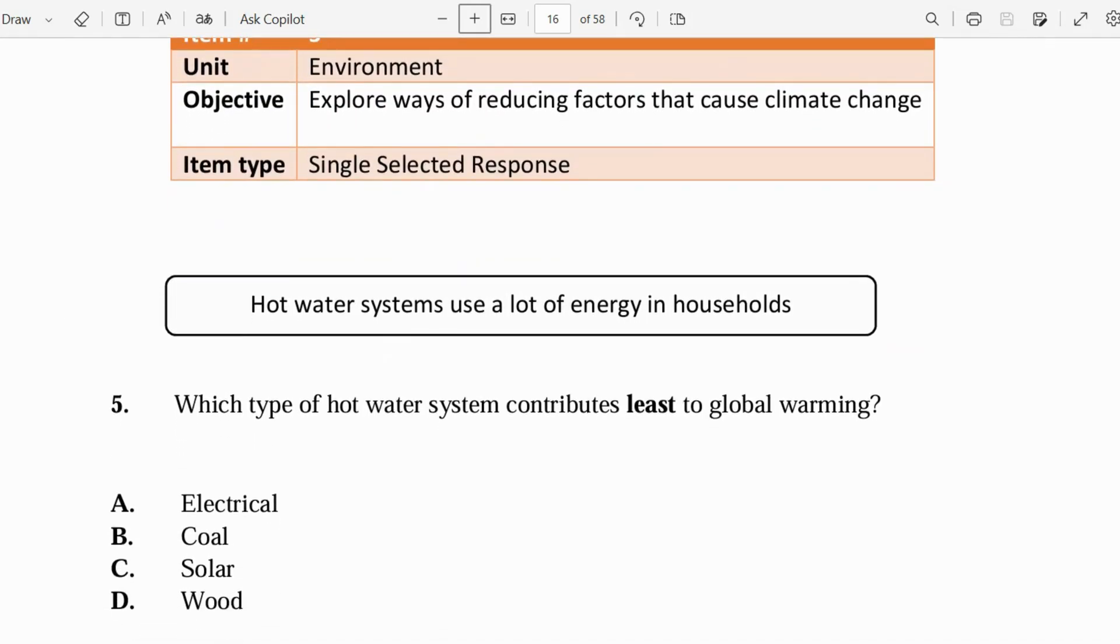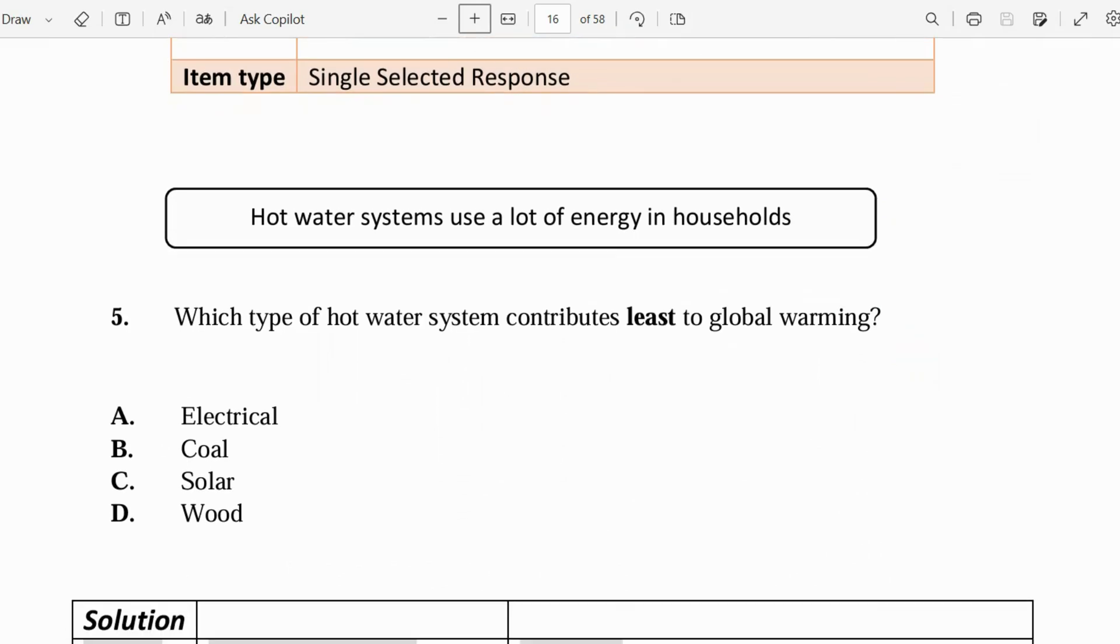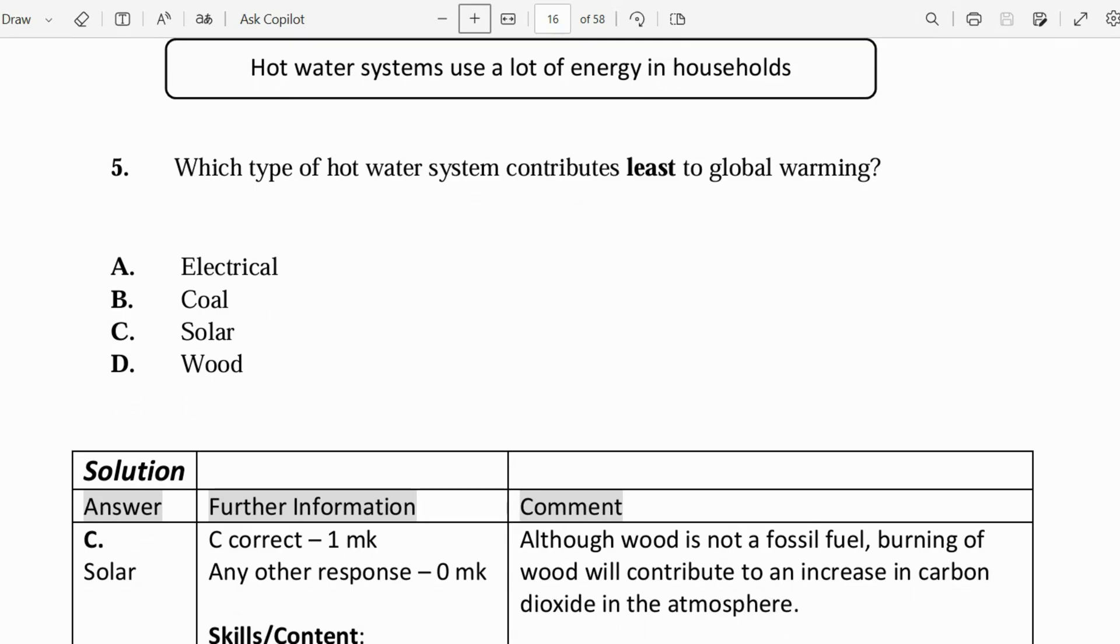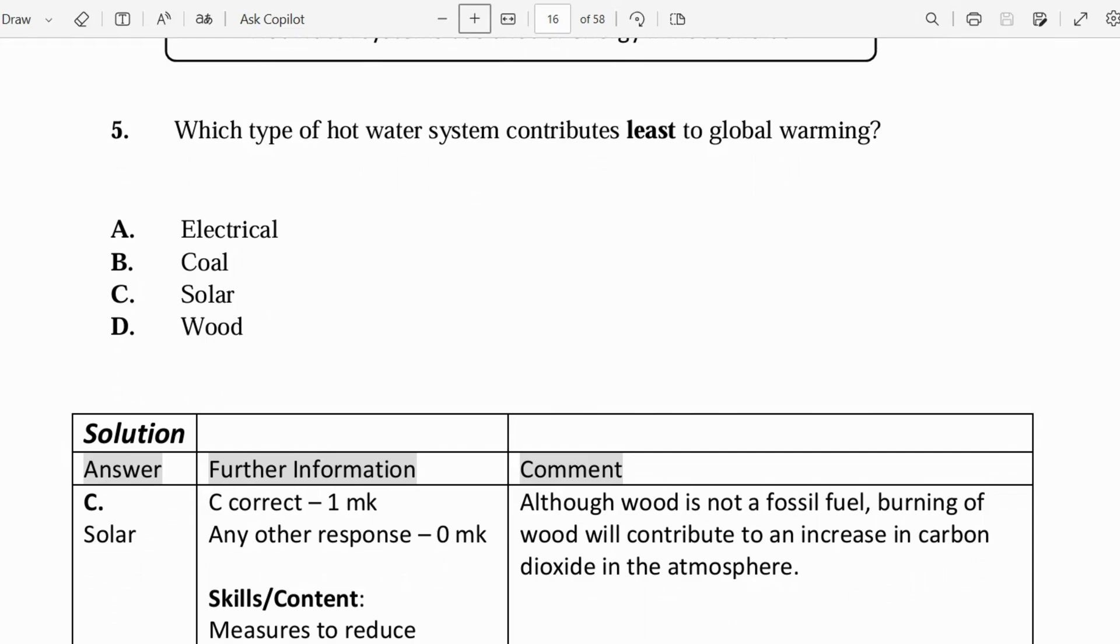Let's move on to number five. Hot water systems use a lot of energy in households. Which type of hot water system contributes least to global warming? And that would be solar. So a lot of persons are switching from your typical electrical unit to solar systems because these are contributing to less global warming. We couldn't have wood because although it's not a fossil fuel, burning of wood will contribute to increased carbon dioxide in the atmosphere, and that is also something that is not required.